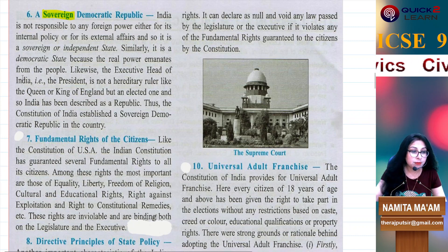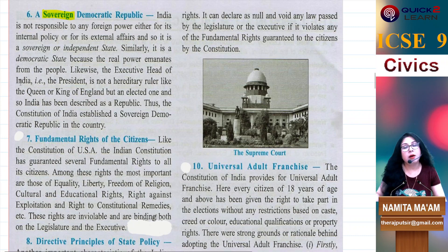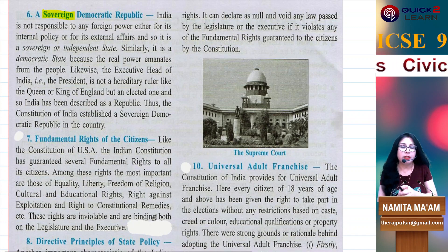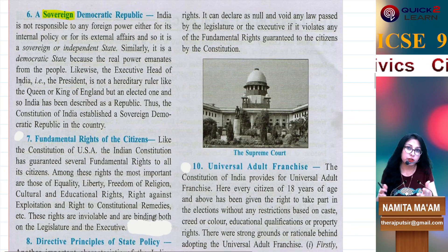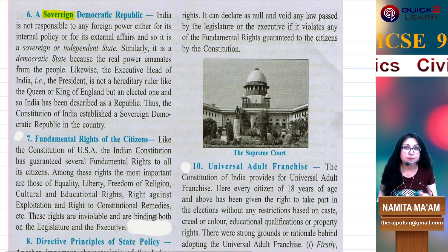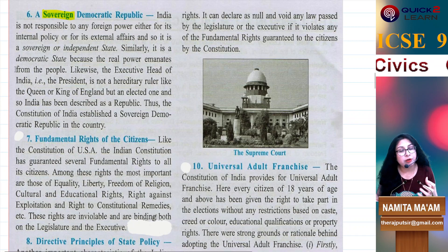What does democratic mean? That we can elect our government by the power of the vote. Through the universal adult franchise policy, every citizen of India aged 18 years and above is entitled to vote. This shows that we are a democratic country — a young democracy.